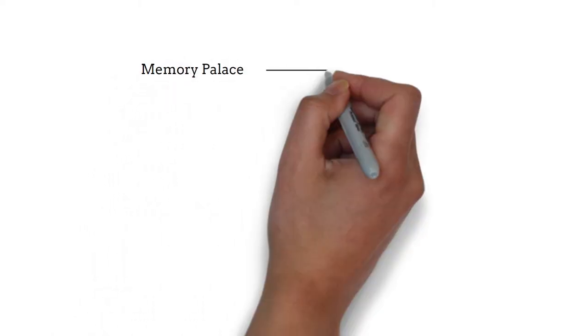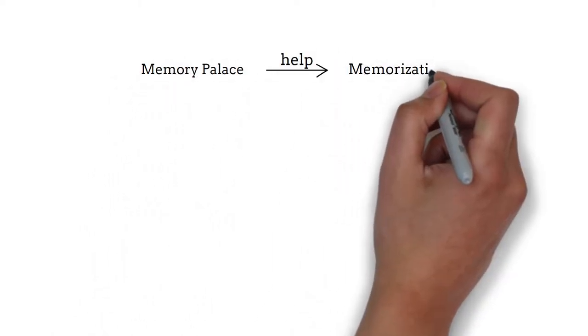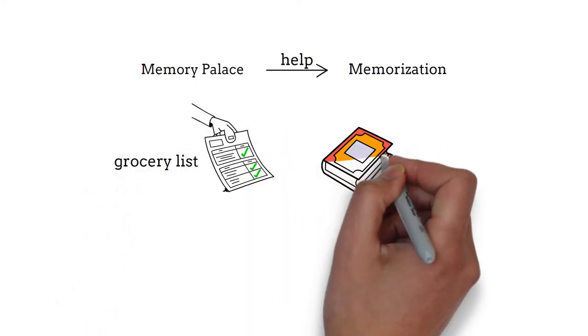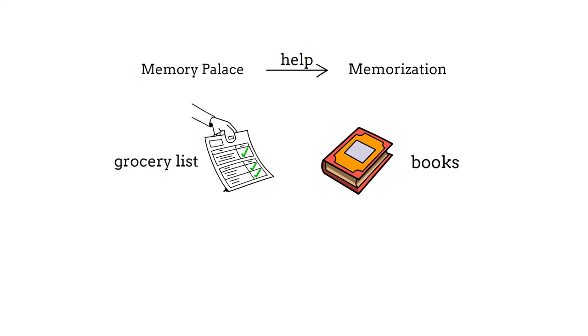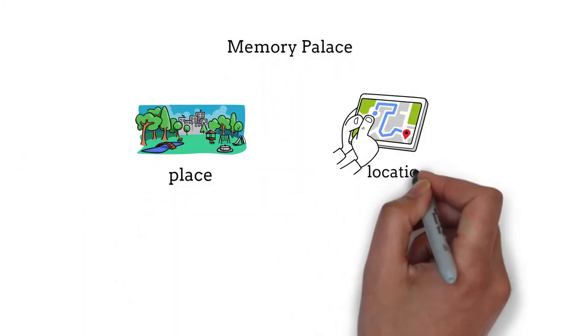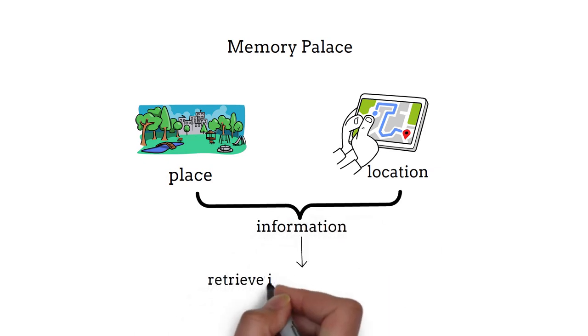A memory palace is a powerful tool that can help you memorize anything from a grocery list to the books you have read. In the simplest of words, a memory palace is a place or location where you dump information to retrieve it back at the time of need.